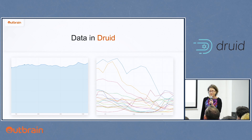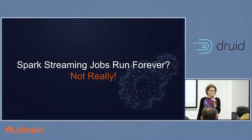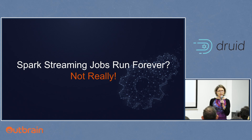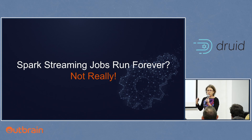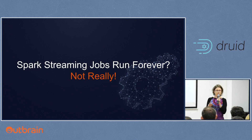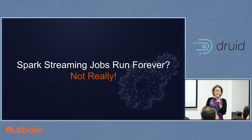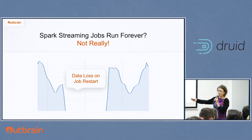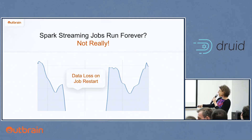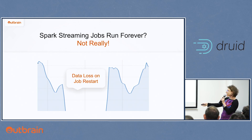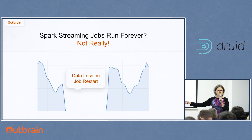Then we ran into a problem. The Spark Streaming job is designed to run forever — it constantly reads events from one Kafka topic and writes to another. But in reality, we have Spark driver failures causing restarts, or we need to deploy a new version. When we looked at data in Druid after a restart, we clearly saw data loss for the period when the Spark Streaming job was down. We could not continue with this — we needed a solution.